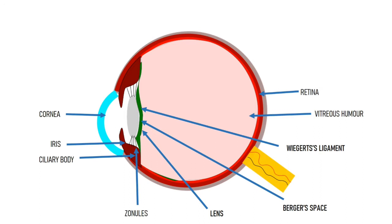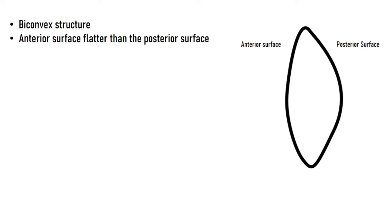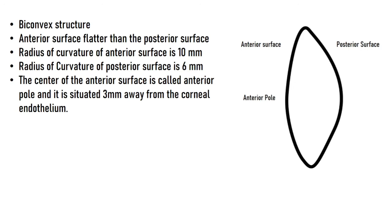The lens is a biconvex structure with two surfaces: an anterior surface and a posterior surface. The anterior surface is flatter than the posterior surface. The radius of curvature of the anterior surface is 10 millimeters, while that of the posterior surface is 6 millimeters. The center of the anterior surface is known as the anterior pole, which is situated about 3 millimeters behind the corneal endothelium.